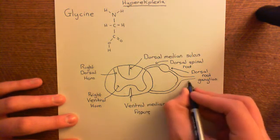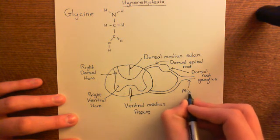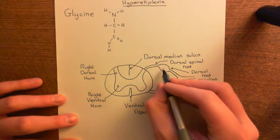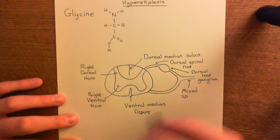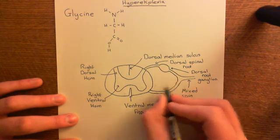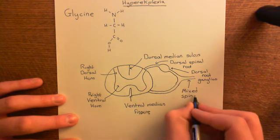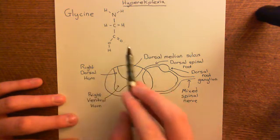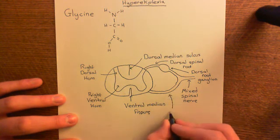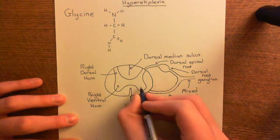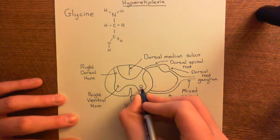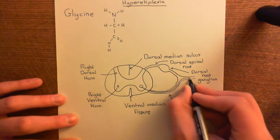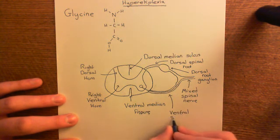All the sensory nerves come in through this mixed spinal nerve, which contains both motor and sensory fibres. All the sensory ones go into the central nervous system, they have their cell bodies in the dorsal root ganglion and then another process going into the central nervous system. All of the motor neurons coming out of the central nervous system come out in this ventral spinal root and then join the mixed spinal nerve. This is the ventral spinal root.